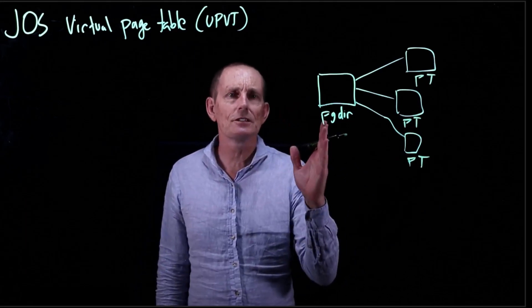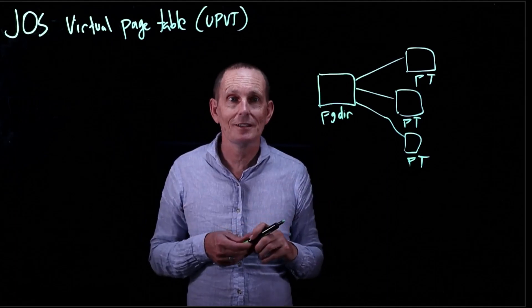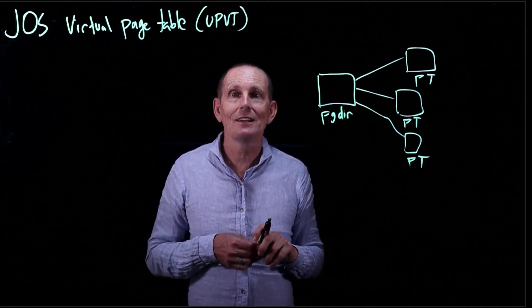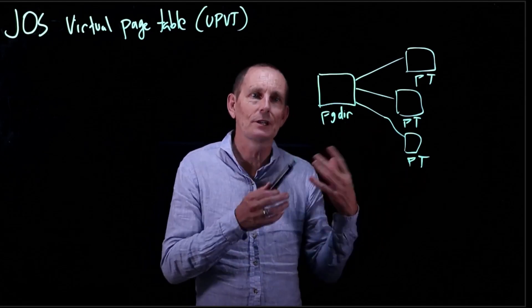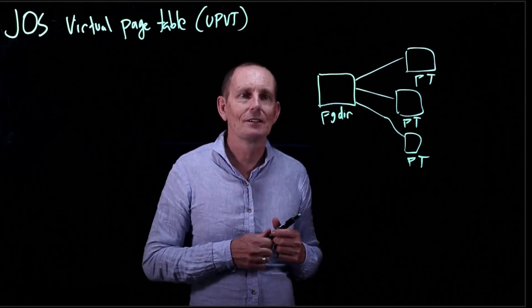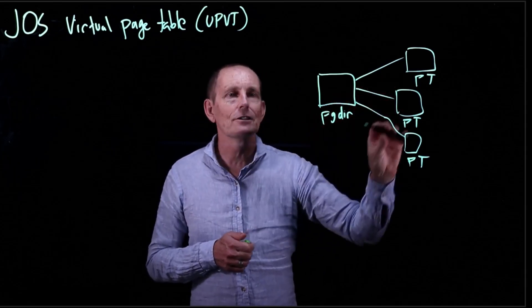So CR3 contains the physical address of the page directory, which makes sense. I mean, if it were a virtual address, then how would it find the physical address? Because it would have to use the page directory, so it would get to the page directory and so on. So we'd have this infinite regress, kind of turtles all the way down. So this is a physical address that points to here, and these are all physical addresses.